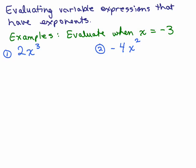So what I mean is we're going to plug in a number for a variable, but there might be an exponent on the variable. For instance, let's evaluate two expressions by plugging in negative 3 for x.